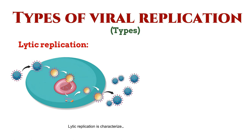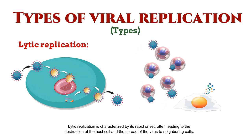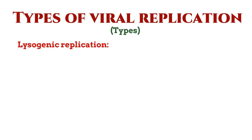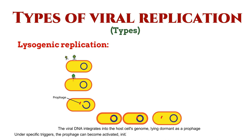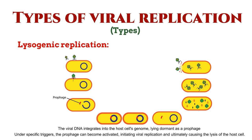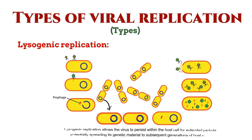Lytic replication is characterized by its rapid onset, often leading to the destruction of the host cell and the spread of the virus to neighboring cells. On the other hand, lysogenic replication takes a more stealthy approach. Here, the viral DNA integrates into the host cell's genome, lying dormant as a prophage. Under specific triggers, the prophage can become activated, initiating viral replication and ultimately causing the lysis of the host cell. Lysogenic replication allows the virus to persist within the host cell for extended periods, potentially spreading its genetic material to subsequent generations of host cells.